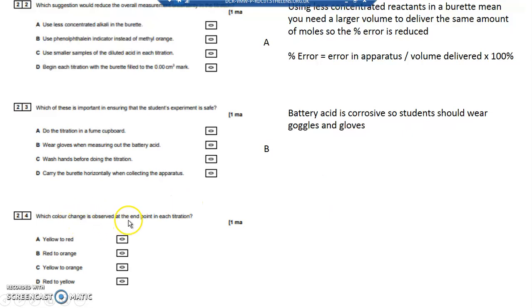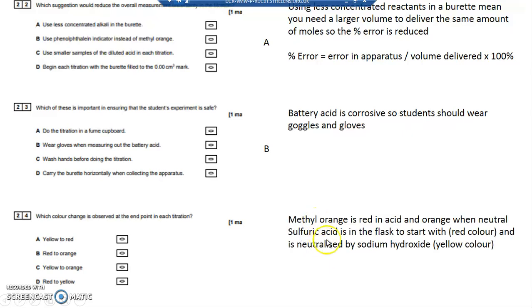Which colour change is observed at the end point of each titration? Well, it's acid in the flask to begin with, and then it's neutralized and might go slightly alkaline with a slight excess of alkali. So it's going to go red to yellow, and it tells you that in the question.